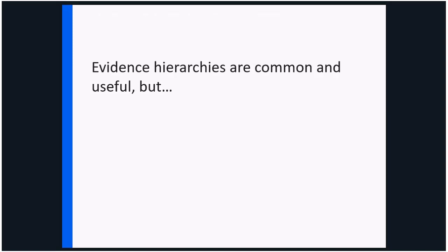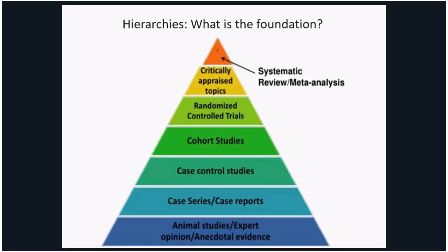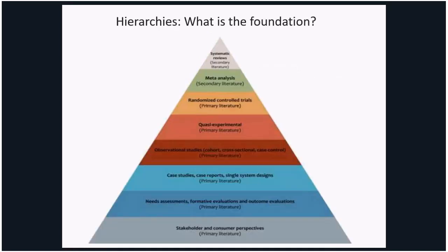Evidence hierarchies are important to think about as you plan your D&I study or apply D&I principles in practice. Here's a traditional research hierarchy that tends to privilege randomized controlled trials near the top and single case studies near the bottom. This hierarchy has been developed primarily for clinical interventions. What's different for public health is the middle — quasi-experimental studies used for learning about policy experiments — and at the foundation, stakeholder and consumer perspectives. Getting information from the audience and people affected by an intervention is really the foundation for public health in many ways.